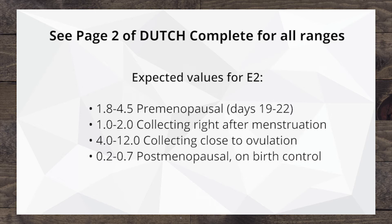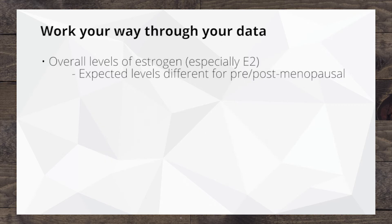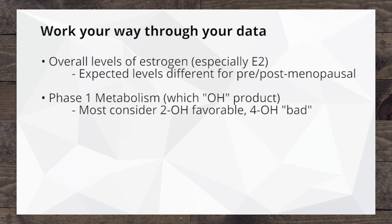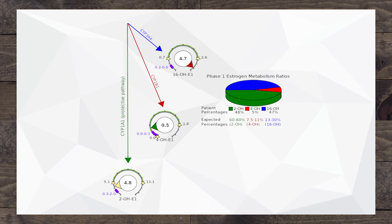We want to look at those levels, each of them, as they compare to the reference range for E1, for E2, for E3, and then now we move on to the downstream metabolism. How is that phase one metabolism going? We can look at the absolute values as they compare to the reference ranges, but we can also look at this pie chart to look at the different ratios. The ratios that we typically see for these three is a 70%, 10%, and 20% distribution.